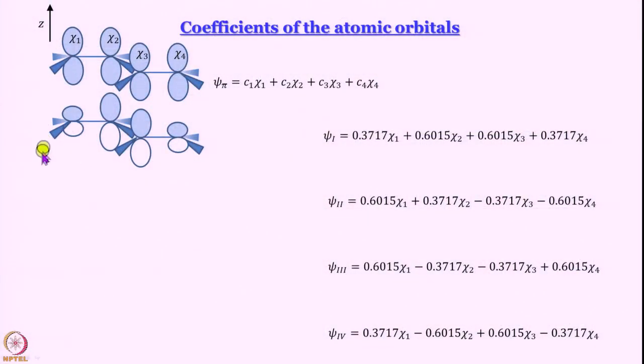Now let us think of what will happen for psi II. In psi II the magnitudes are going to get reversed because now chi_1 is multiplied by 0.6015, chi_2 is multiplied by 0.3717. So this chi_1 orbital will be bigger, chi_2 orbital will be smaller. One more thing: we have 2 minus signs here. So if I have taken it like this for chi_3 and chi_4, I should have hollow lobes at the top and solid lobes at the bottom. This is your chi II. What about chi III? I encourage you to work out chi III yourself before going to the next step.